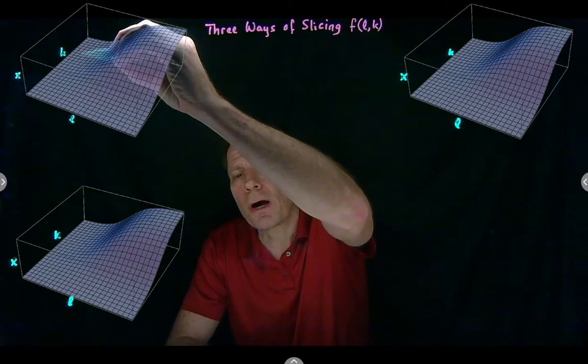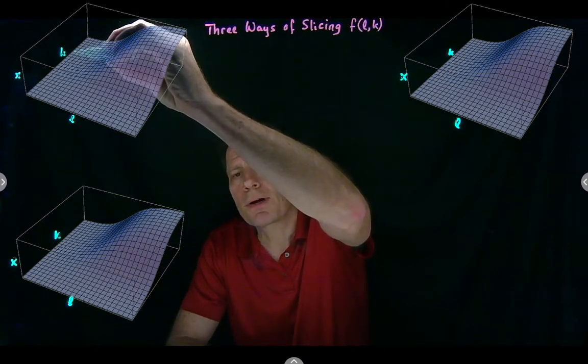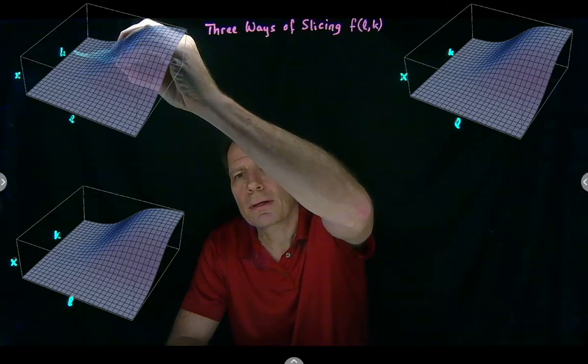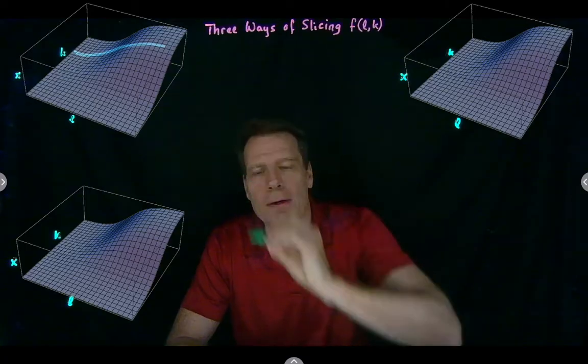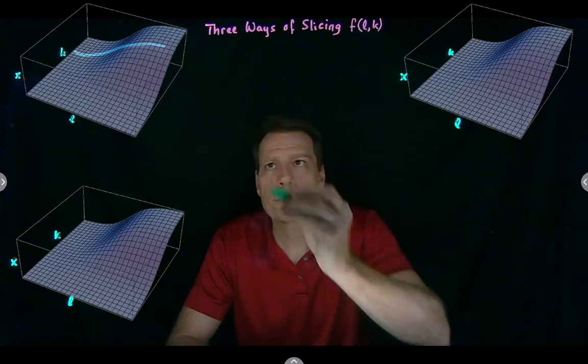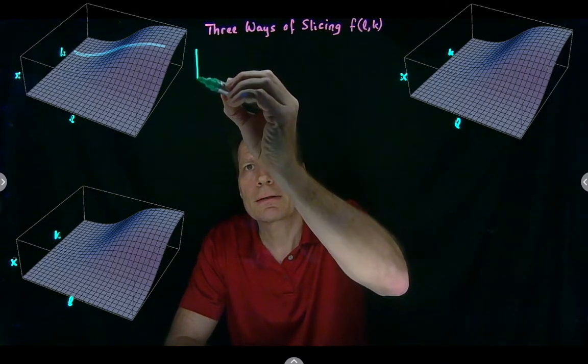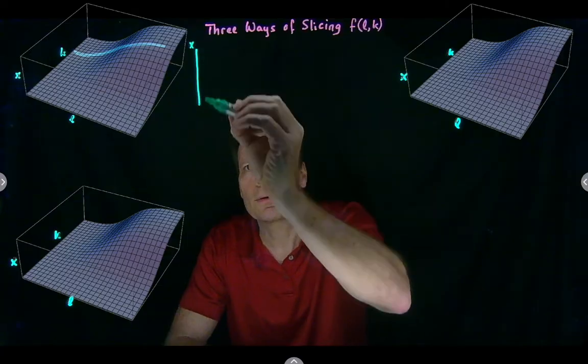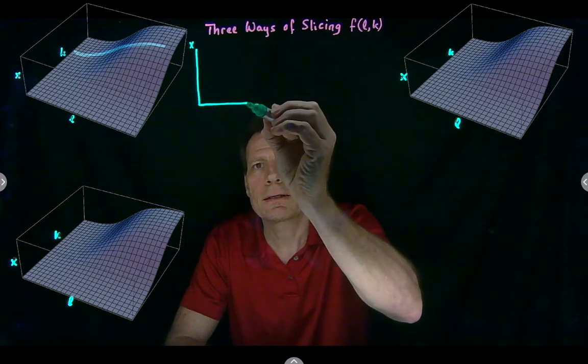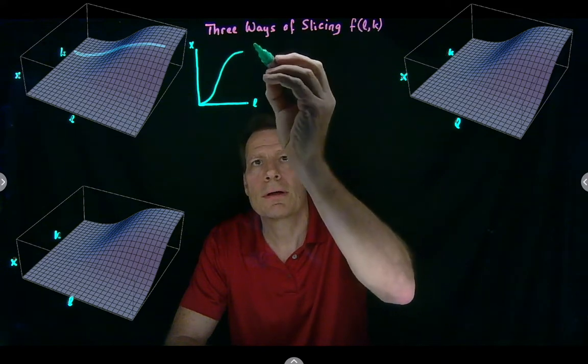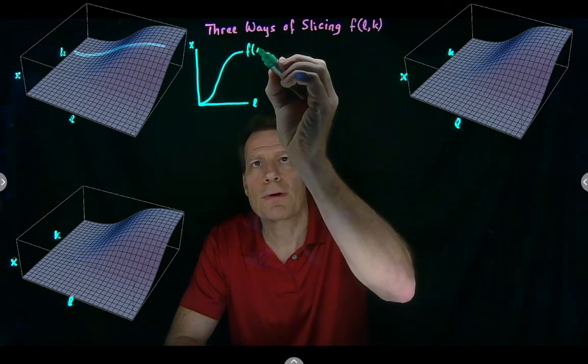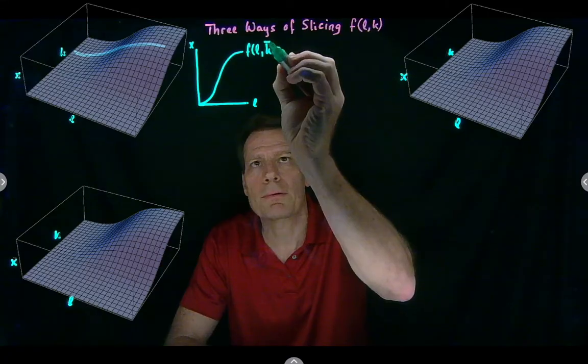In that case, we're operating on a slice of this production function that holds capital fixed, and we can trace out how output's going to change as labor increases. And we can graph that slice by putting x on the vertical axis, labor on the horizontal axis, and tracing out what we call the short run production function that varies labor but holds capital fixed.